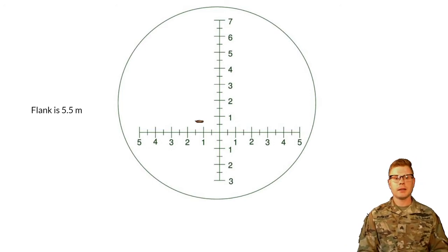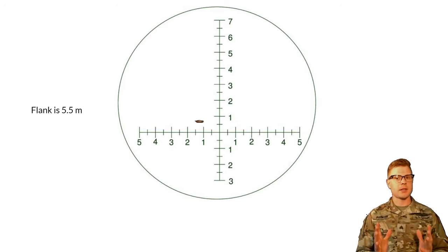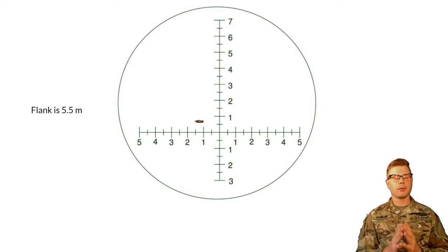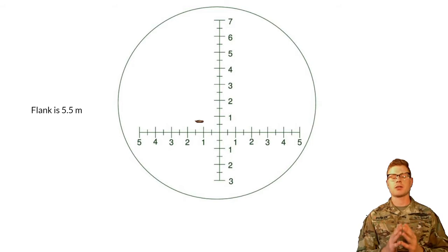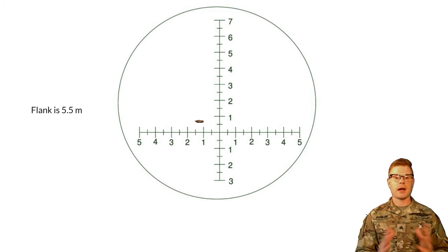The next example: the flank is still the same size — it's still a BMP — but remember what we talked about being constant. Now it's just farther away. Take five seconds and go ahead and work through this exercise.